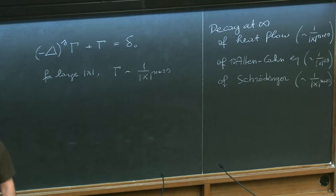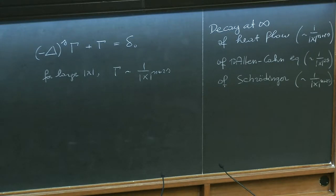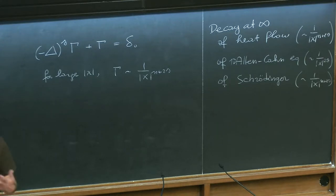Now what I would like to mention briefly is the decay of ground state solutions for the Schrödinger equation, which is again just polynomial instead of exponential. The fundamental solution of the fractional Schrödinger equation — for large X, gamma decays like 1 over X to the N plus 2S. Some of you were asking me why this happens. Well, the first answer is I don't know, but let me try to give you a likely-to-be-wrong but convincing argument in a sense.